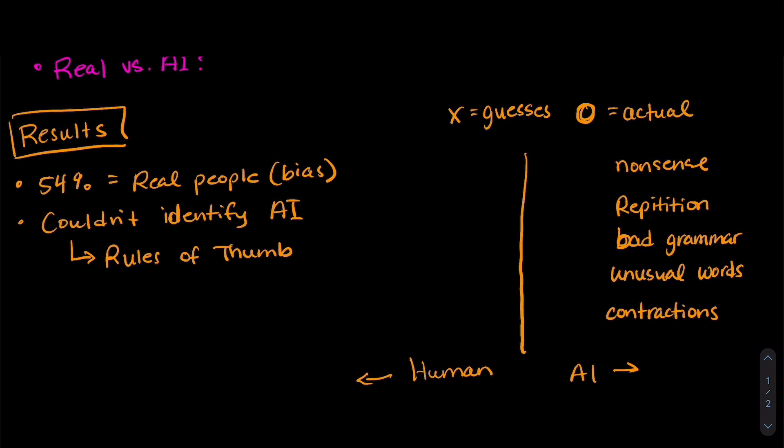So our test subjects, they thought that bios that had more nonsense in them were more likely generated by AI. The actual data supports that. Same thing for repetition within the bios. For bad grammar, people thought that the more bad grammar there were, the more likely it was generated by an AI. But the actual data shows that it's more likely that humans have bad grammar in their bios than the AI.